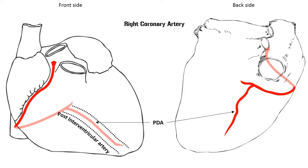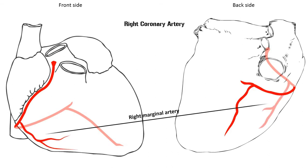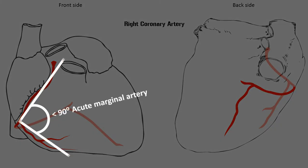The next artery on the list is called the right marginal artery. It is a branch of the right coronary artery, and it is called marginal because it runs along the right margin of the heart. Another name for this artery is the acute marginal artery, because if you look at the angle between these two arteries, you will see they form an angle below 90 degrees, which is an acute angle.